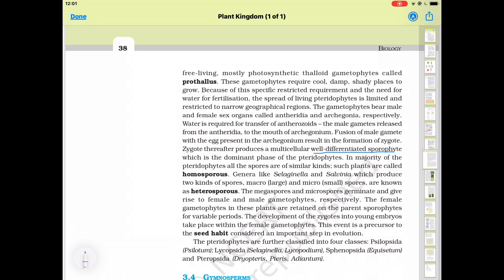In pteridophytes also haplodiplontic life cycle is present that is in their life cycle haploid phase also is present and diploid phase also is present. Diploid phase is represented by the sporophyte by the main plant body and haploid phase is represented by the gametophytic phase where antheridium and archegonia are produced. So in pteridophyte also alternation of generation is present that is diploid alternates with haploid and haploid alternate with diploid.